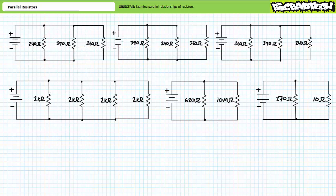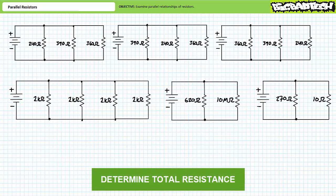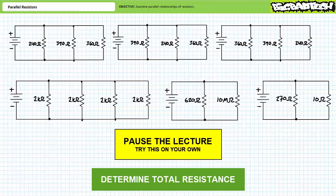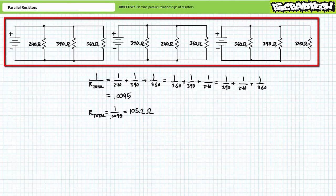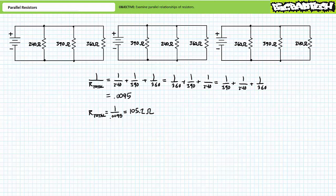Here's another set of example problems, each designed to illustrate an important property of resistors in parallel. The first three circuits are just different configurations of the same three resistors in parallel. As such, the total resistance for each is roughly 105.2 ohms. This illustrates that the order of resistors inside a parallel circuit does not influence the total resistance seen by the source — any parallel configuration of the same three resistors in any order always results in roughly 105.2 ohms.